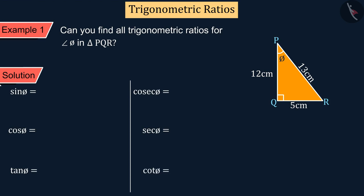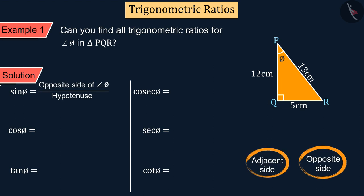In the previous video, we learned that the ratio between the opposite side of the angle and the hypotenuse is the sine of that angle. Can you tell the opposite side, the adjacent side, and the hypotenuse for the angle phi in triangle PQR?